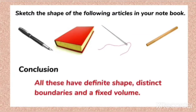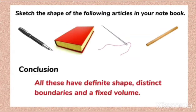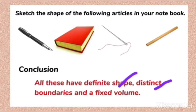So what we can conclude is that all these have definite shapes — that's why we could make the sketch of them. They have distinct boundaries, as you can see, and they have a fixed volume. So these are the conclusions we can make from this activity: by sketching the shape of the articles, we conclude they have definite shape, distinct boundaries, and fixed volume.